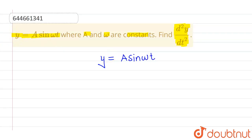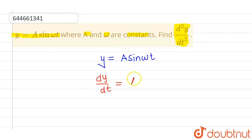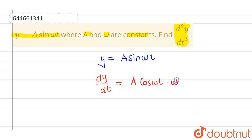Now, first dy over dt will be: since a is constant, therefore a into differentiation of sine omega t is cos omega t, into differentiation of omega t, which will be omega. So dy/dt = a·ω·cos(ωt).